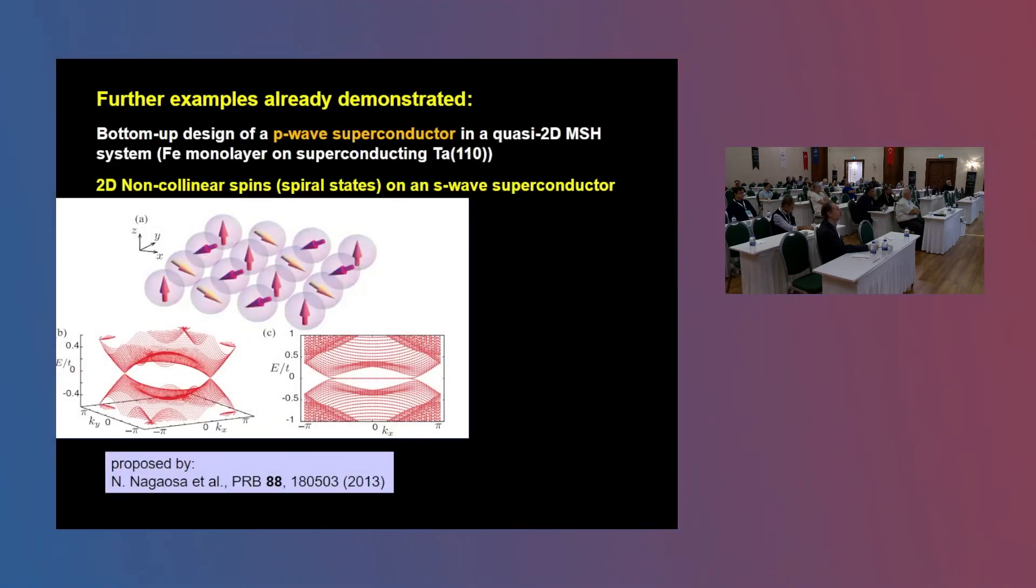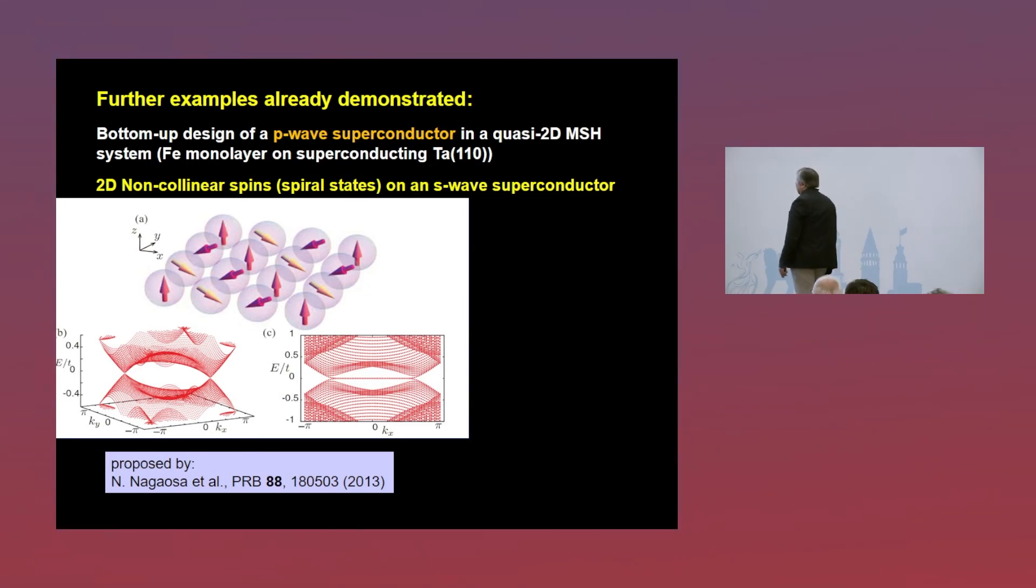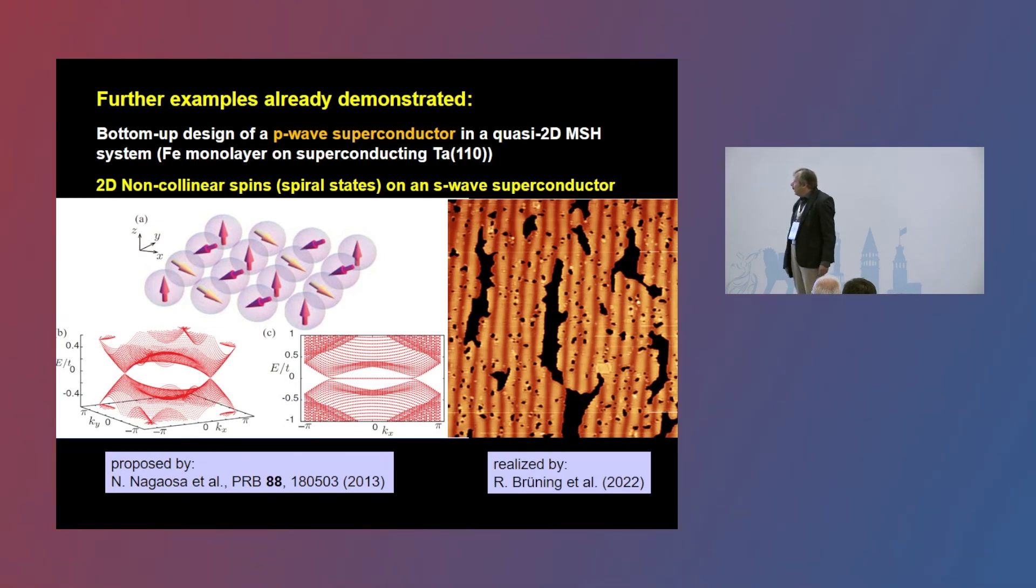Finally, and this is another beautiful prediction by theory, in this case by Nagaosa and co-workers from Japan, they have predicted that if you bring a spin spiral state in contact, in proximity to an S-wave superconductor, you can also create a novel type of unconventional superconducting state. In this case, a P-wave superconductor. And again, this system has been realized now, also experimentally, by one of my PhD students here. In this case, iron monolayer actually was grown on a superconducting tantalum substrate.